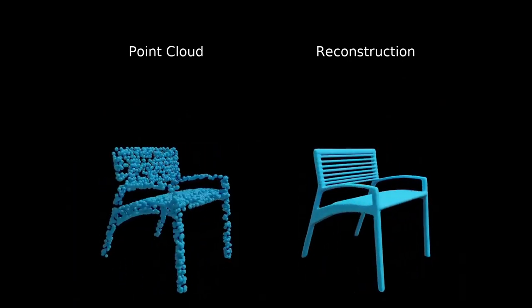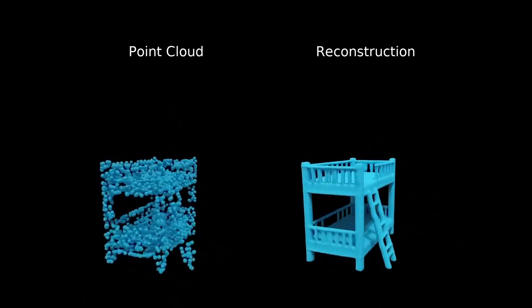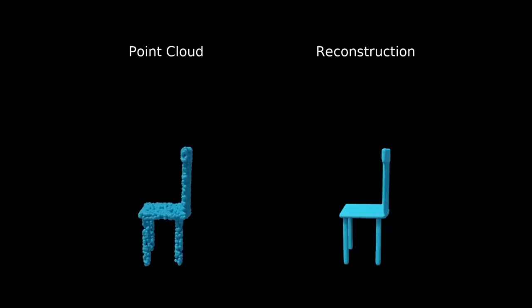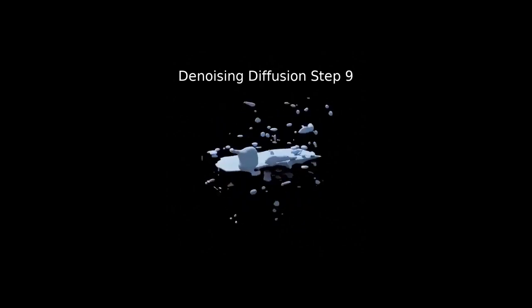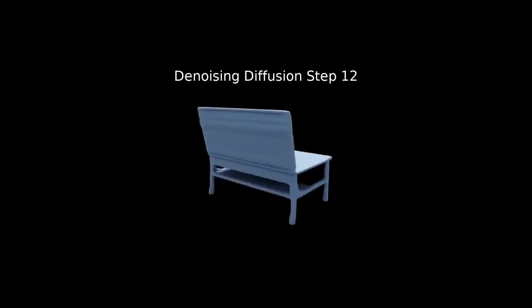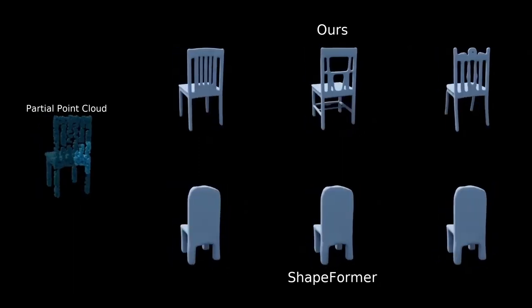Next, we are going to show some shape autoencoding results. Given a point cloud, the model is able to reconstruct shapes with detailed structures. We are going to show some selected generative results. The diffusion model requires several steps to generate a shape. The shape is generated gradually during the diffusion process. We can apply our model to several applications, including partial point cloud completion, text condition generation and single view reconstruction.